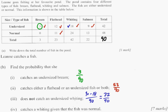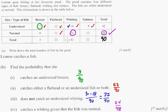Catches a whiting given that the fish is normal — this is conditional probability. We only want to look at the normal fish, so our sample size is 48, which becomes our denominator. The number of normal whiting is 24, so we get 24 out of 48, which is one half. You can leave it like that. The one problem kids have is sometimes they turn the fraction into a decimal and then don't round correctly — I'd just leave it as a fraction.